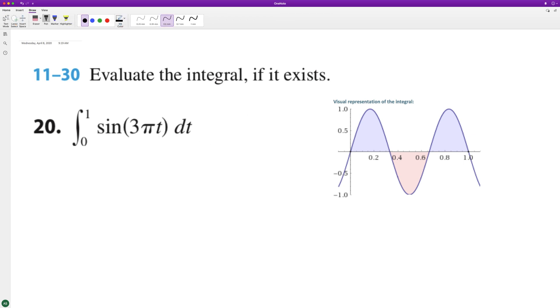So what we'll do here is we'll use u substitution. We'll set u equal to 3 pi t, and du is equal to 3 pi.